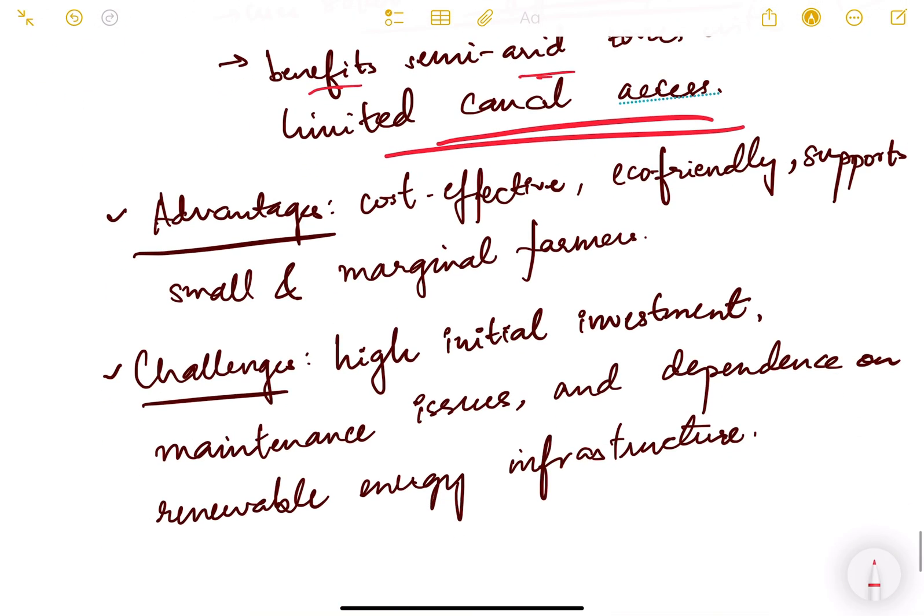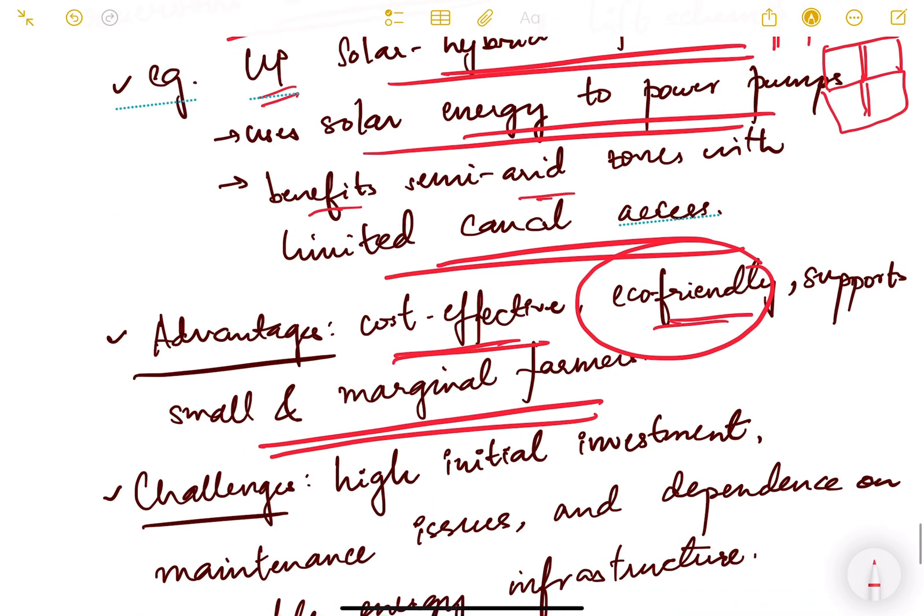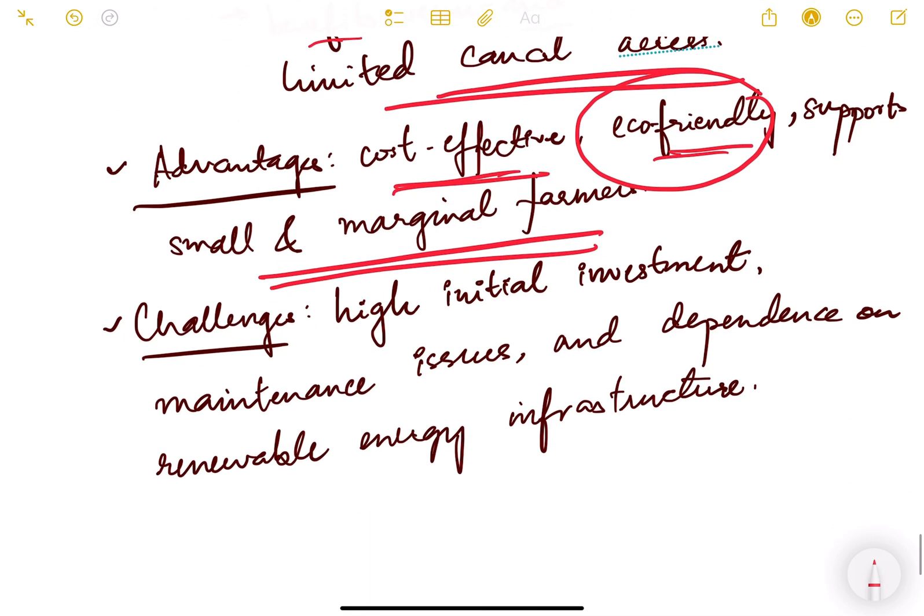Advantages: it is cost-effective, eco-friendly, and supports small and marginal farmers. It's eco-friendly because you are not constructing any wall on the river, not breaking the natural flow of water, so there is no ecological damage. It is cost-effective because the project is smaller.